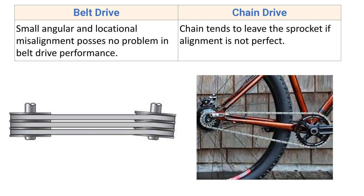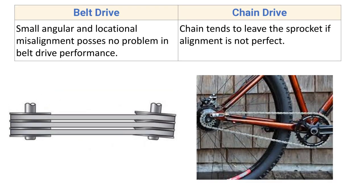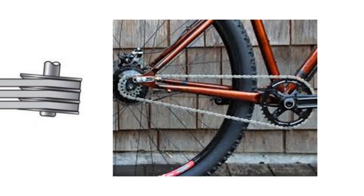Small angular and locational misalignment poses no problem in belt drive performance. Even if the two shafts are slightly misaligned, this will not create any problem while transmitting power in a belt drive. In chain drive, however, the chain tends to leave the sprocket if the alignment is not perfect — if the shafts are misaligned, the chain may fall off the sprocket.